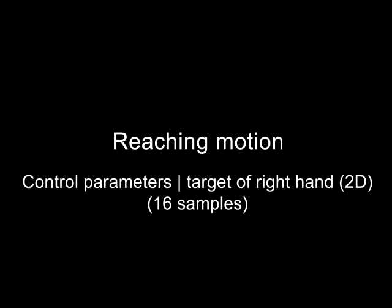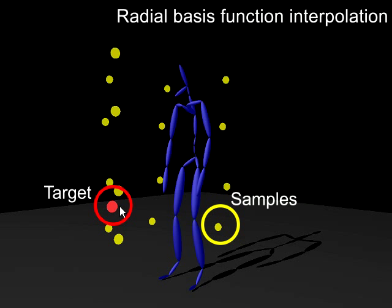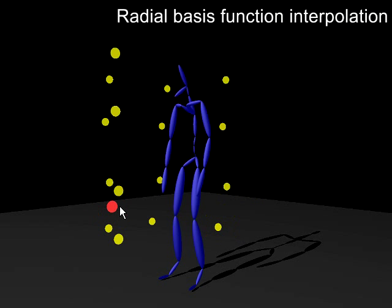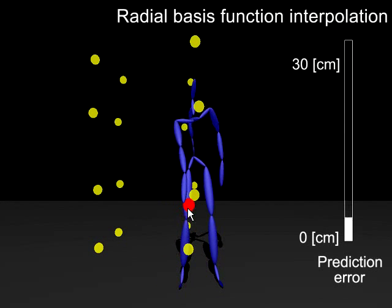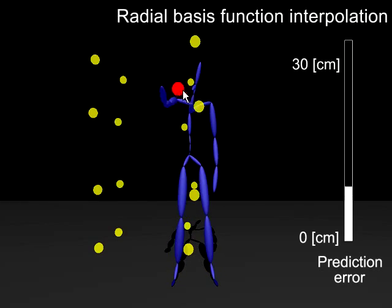This example parameterizes reaching motions with respect to the heights and directional angles of target positions. This shows the differences in the final hand positions between the synthesized motions with radial basis functions and the desired target positions.